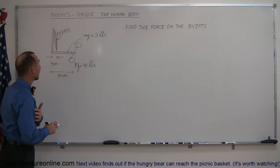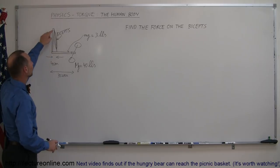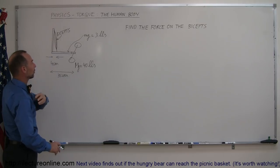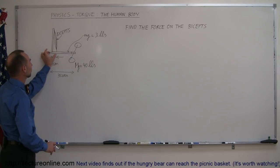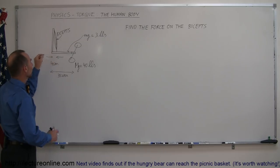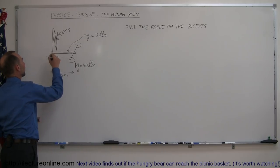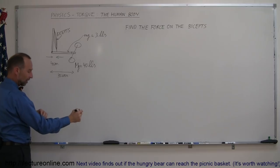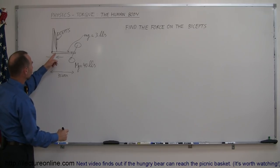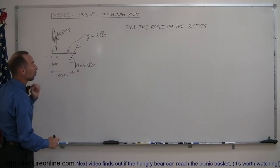The interesting thing about the bicep is at the very top where it's connected to the shoulder and the humerus, the upper arm bone right here, it's attached pretty well close to the bone. But over here it's attached about four centimeters away from where the elbow has its joint, so the bicep is actually attached to the forearm bone right here at a distance about four centimeters away from the joint which is about one and a half inches away.